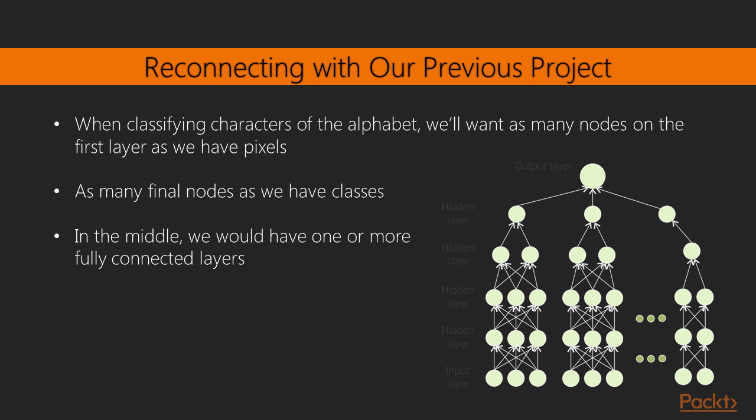The point of having more layers in between is to make a better approximation of different variations of the same image. For example, if we want to recognize a car object, but the cars appear in different orientations and colors in our dataset, then the individual hidden nodes in the in-between layers act as whole-image object feature recognizers.